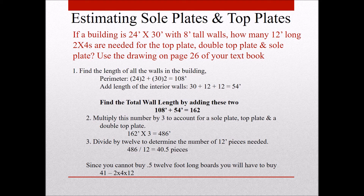Refer to page 26 of module 26 in your textbook. There's a sample floor plan of a building that's 24 feet wide and 30 feet long, with some doors, windows, and interior partitions. The first thing we're going to calculate is how many 12-foot two-by-fours are needed for the top plate, double top plate, and sole plate. This is a perimeter calculation: two walls are 24 feet, two walls are 30 feet — that gives us 108 feet.